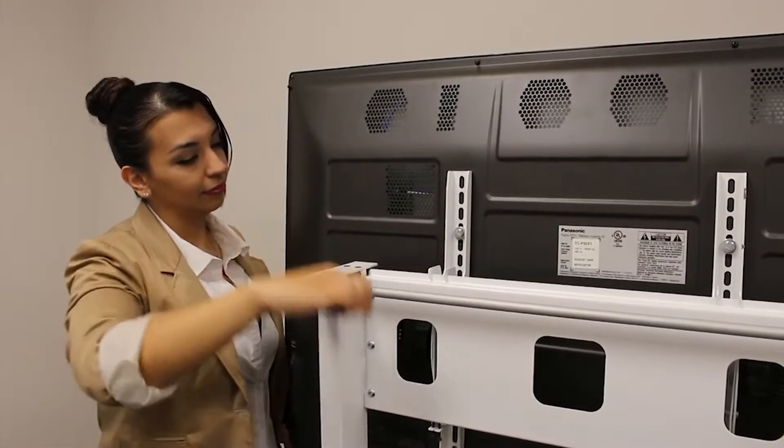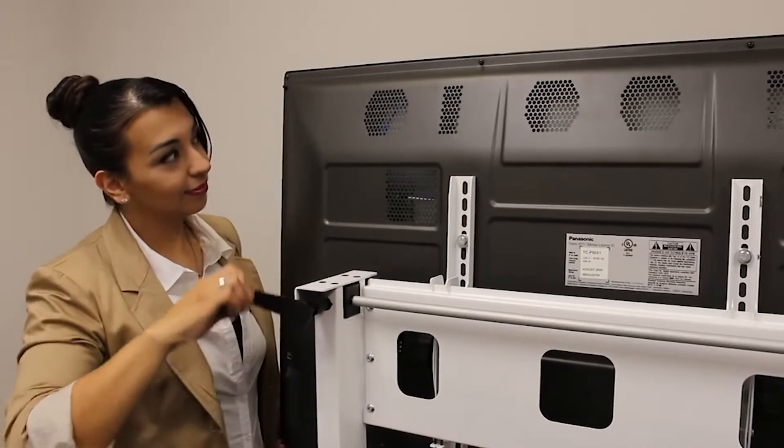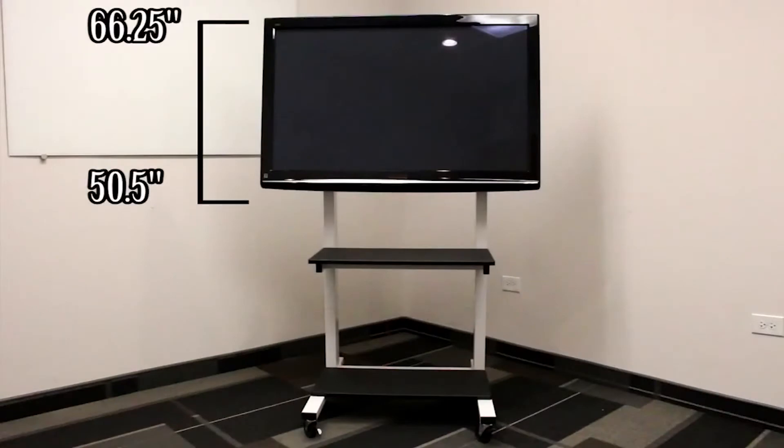Changing the screen height on the CLCD is effortless with an easy to use crank handle that manually adjusts the cart's height settings for desired usage from 15.5 inches to 66.25 inches high.